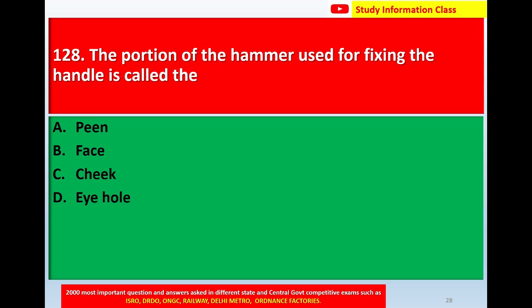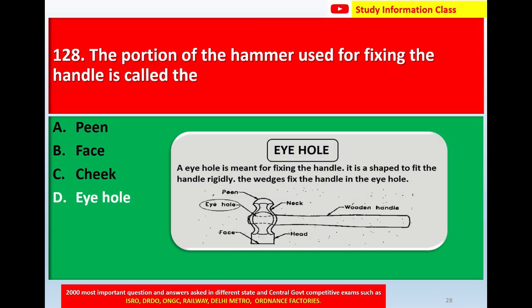Question number 128: The portion of the hammer used for fixing the handle is called — Option A: Pin, Option B: Face, Option C: Cheek, Option D: Eye hole. The correct answer is eye hole. The eye hole is used for fixing the handle; it is shaped to fit the handle rigidly, and wedges fix the handle in the eye hole.